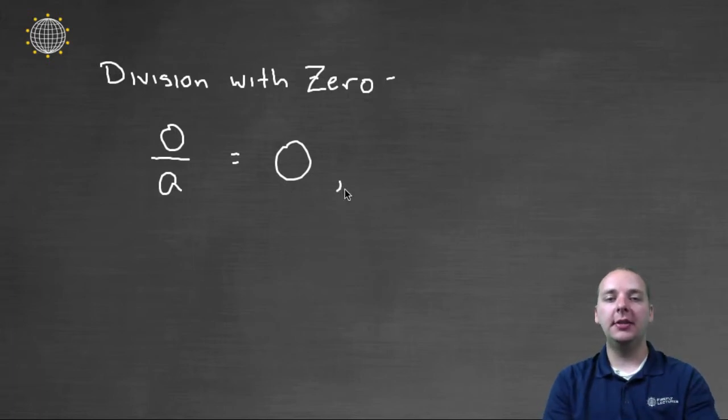Now, the only condition is that your denominator is not allowed to be zero. So zero divided by zero is something else that we'll discuss in just a minute. But for now, if you have zero divided by any number, you'll get zero.